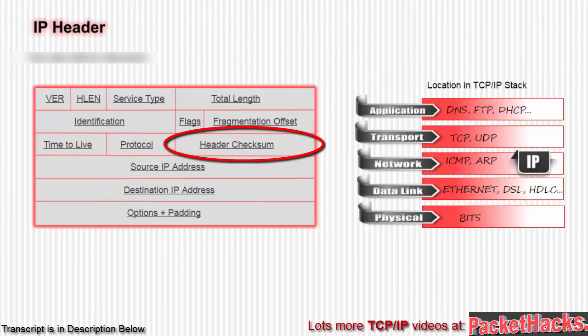Next we have the header checksum. The purpose of the checksum is to detect corruption in transit. For IP, the checksum covers the header but not the data. The sender uses ones-complement arithmetic on the header and the result is sent with the packet. When the receiver applies the same algorithm, it produces its own result — if the results don't match, the packet is rejected.